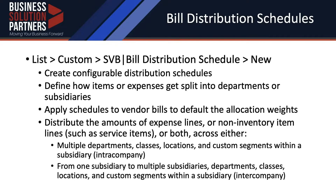Another change you'll see in your account upon installing the bundle is a new custom record called a bill distribution schedule. You can find your bill distribution schedules under Lists > Custom > Shared Vendor Bill > Bill Distribution Schedule. These are a totally customizable way to distribute your expenses. You can define on the bill distribution schedule how non-inventory items like service items or expenses get split into departments — for an intercompany distribution or across segments for an intra-company distribution. These schedules can be applied to vendor bills, and for percentage-based distributions you can specify default allocation weights. You can distribute amounts across either segments or entities.